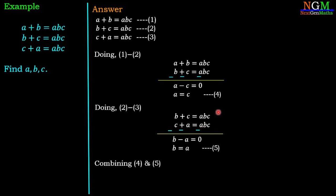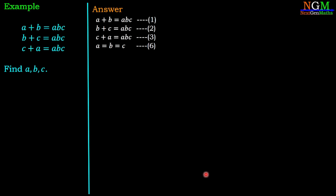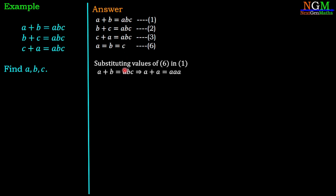By combining equations 4 and 5, we have B equals A and A equals C, therefore A equals B equals C — equation 6. We now substitute equation 6 into the first equation A plus B equals ABC. Since B equals A and C equals A, we get A plus A equals A times A times A.